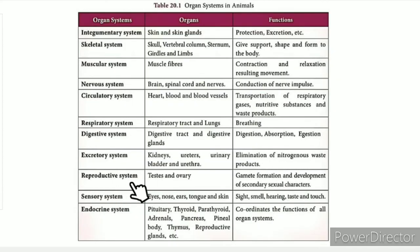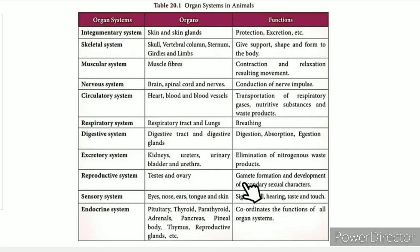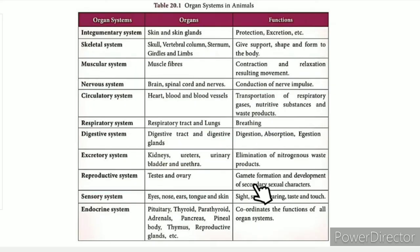The reproductive system is responsible for gamete formation and the development of secondary sexual characters.